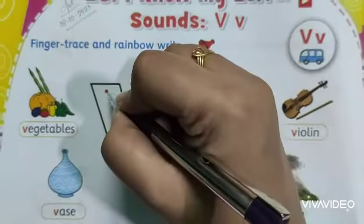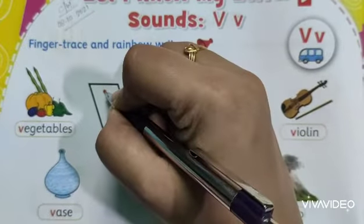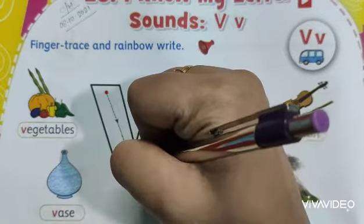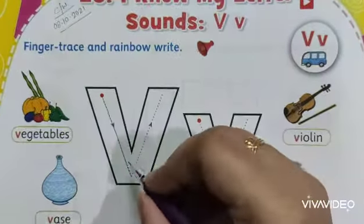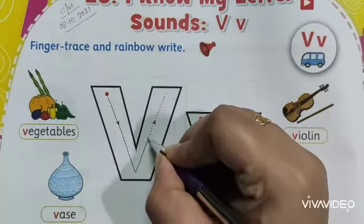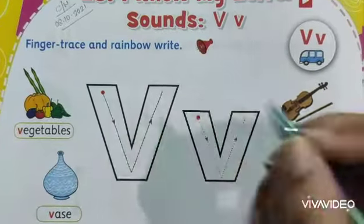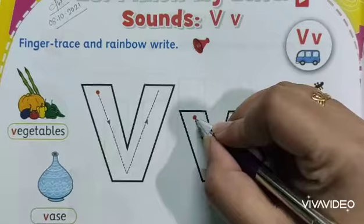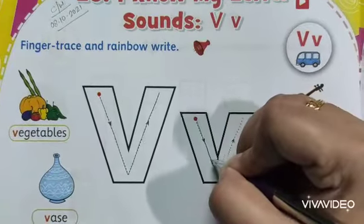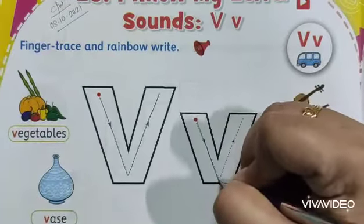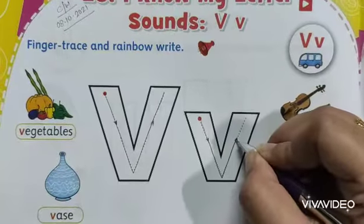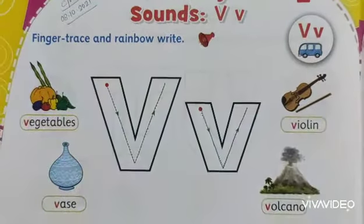Now you write the capital V first. It is a slanting line, then the opposite slanting line will go up. Same way, you have to write the small V — two slanting lines are joined together.